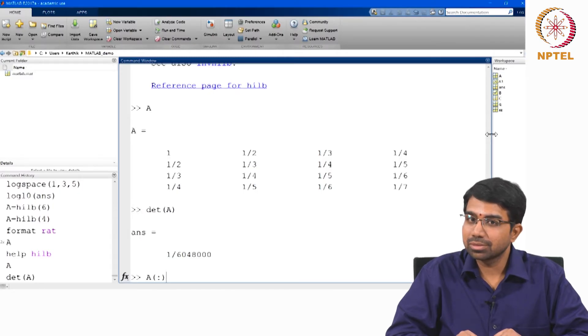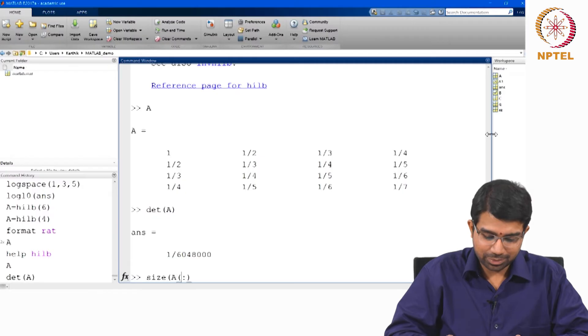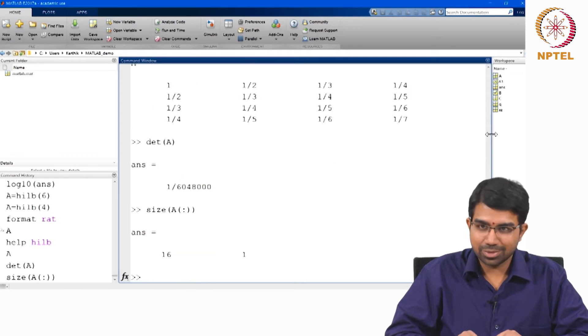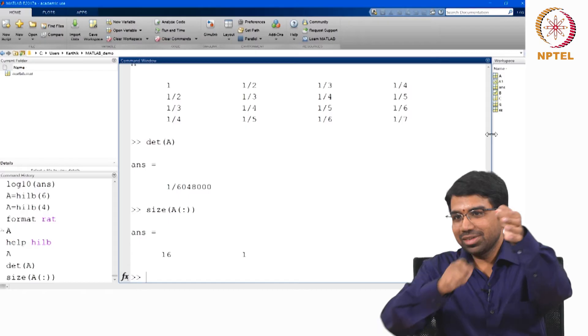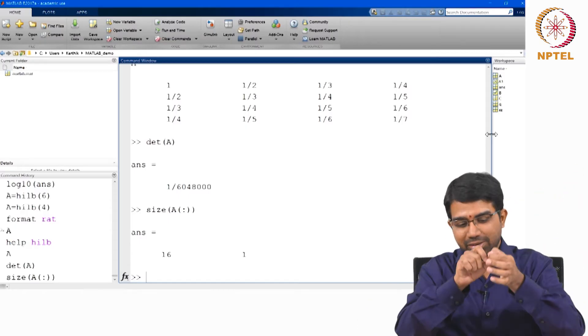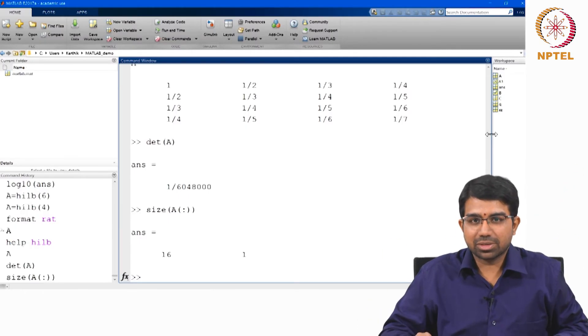Sure, so what is size of A colon? Okay, it is going to be 16 by 1. So A colon stretches out the matrix, it gives you a column vector of the entire matrix.